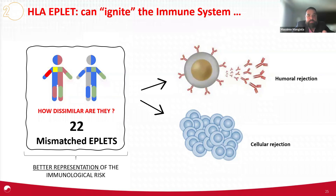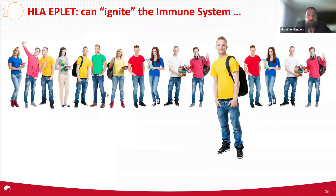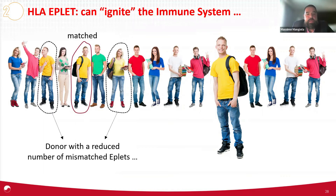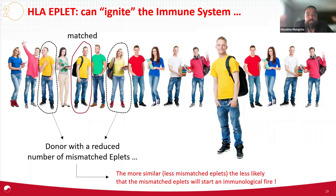There is a direct correlation between the amount of mismatch and the likelihood of developing an immune response. So when we look at a donor and a patient, the best practice is to find a match — but that doesn't happen all the time. The next step is to determine which one in the pool of donors is the most similar to my patient, because the more the similarity, the fewer the mismatched eplets, which translates into a lower probability that the mismatched eplets will start an immunological fire.